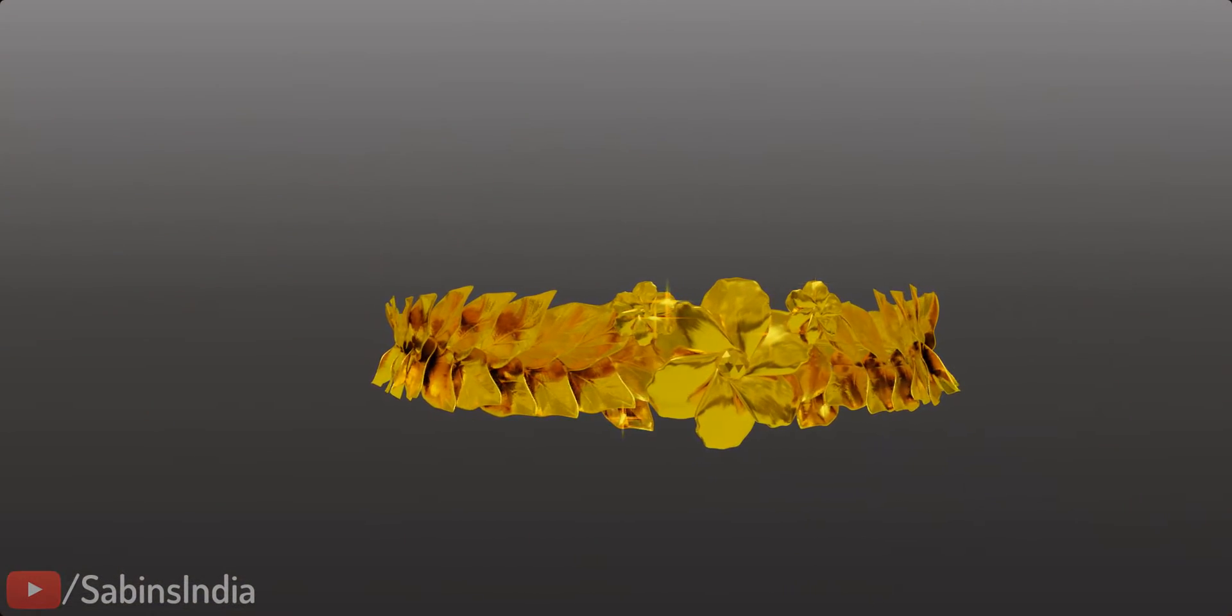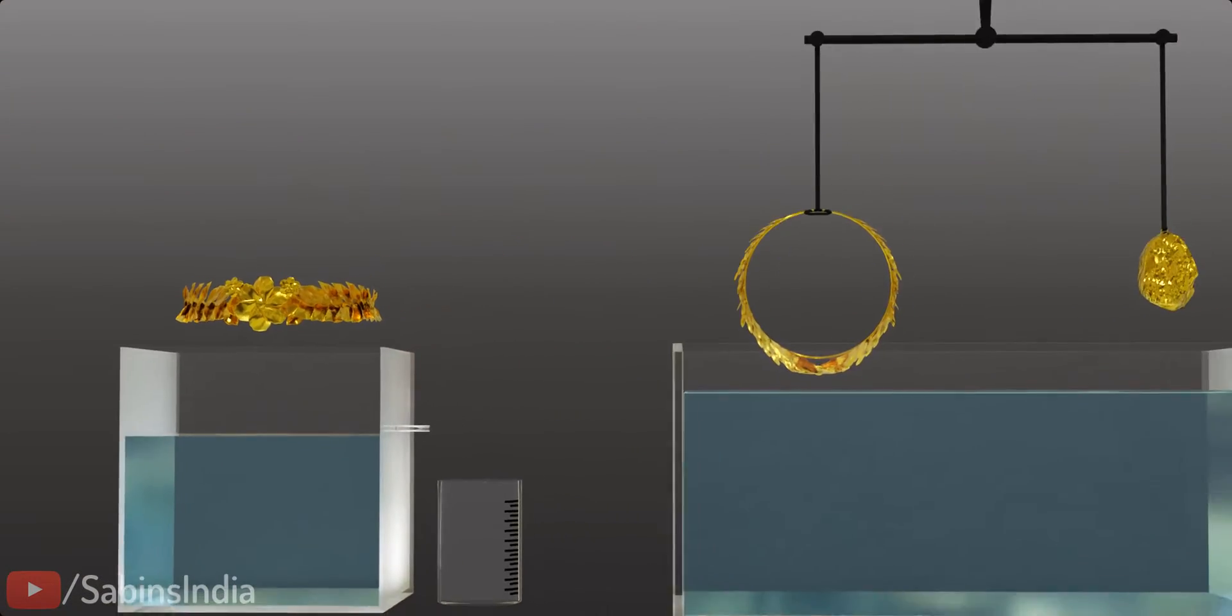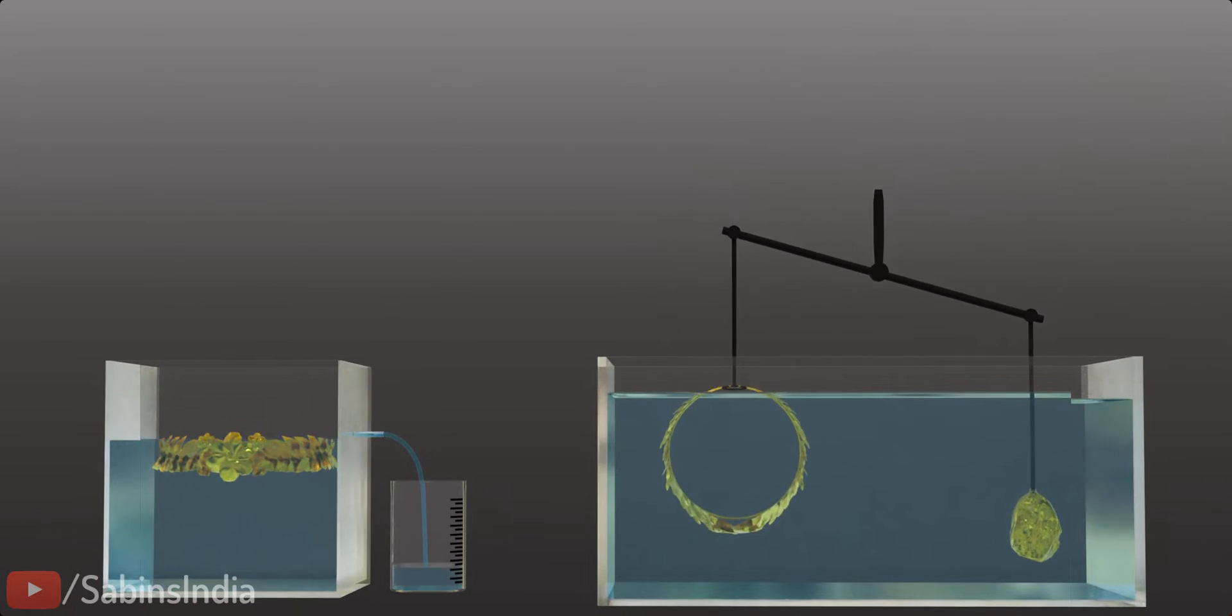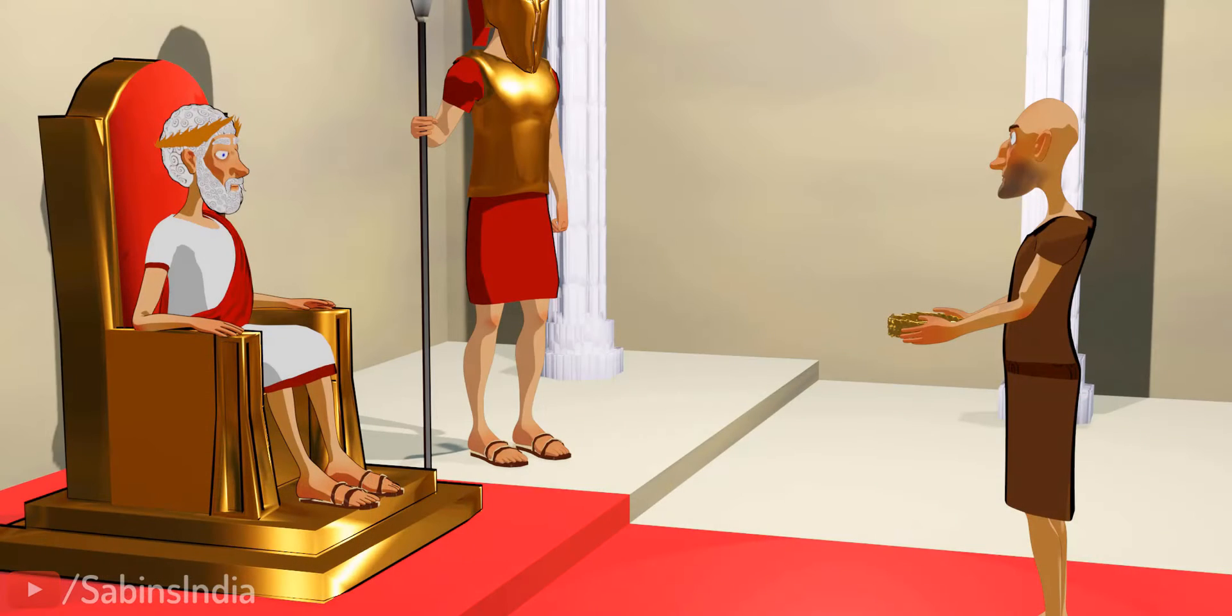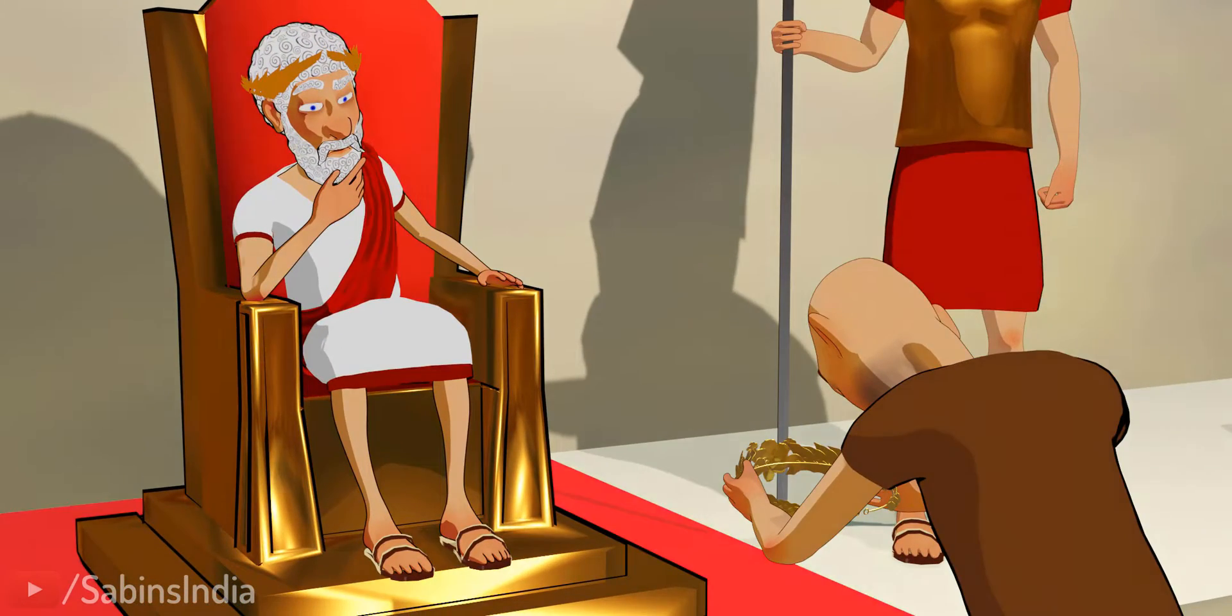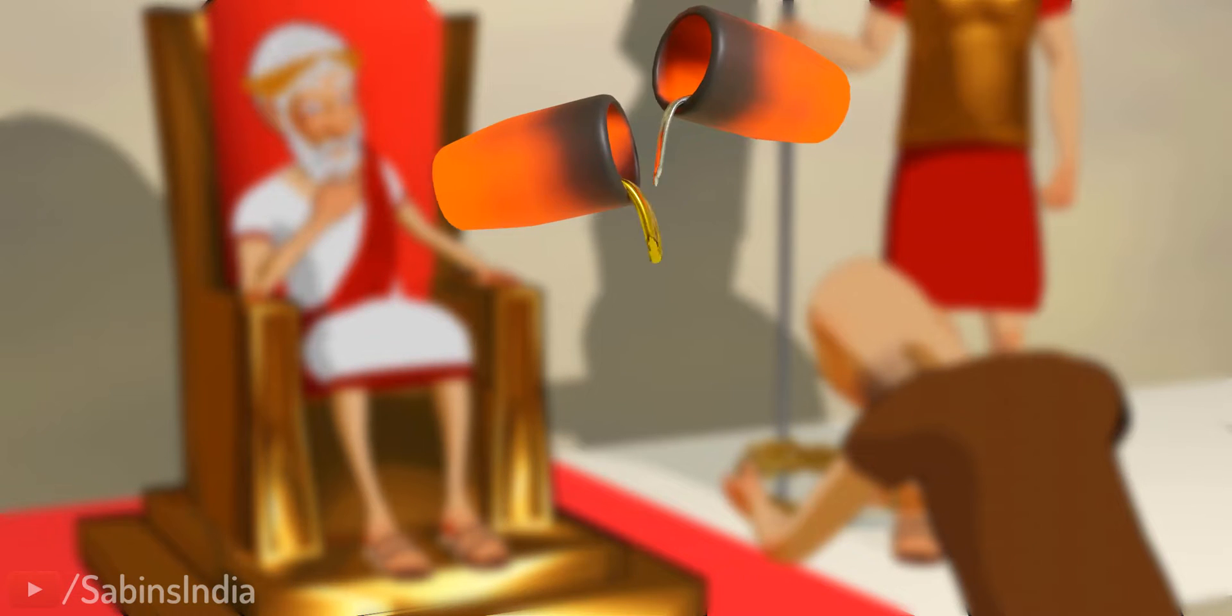More importantly, did Archimedes solve his king's crown problem using an immersing experiment or a float balance? The king of Syracuse was suspicious about his crown's gold quality. There were rumors that the goldsmith had mixed silver with the gold and cheated him.